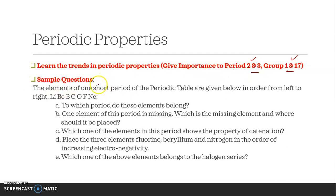Here are sample questions. For example, elements of one period are shown and related questions are asked: to which period do these elements belong? One element is missing, which is it and where should it be placed? Which element shows properties of catenation? Place three elements fluorine, beryllium and nitrogen in order of increasing electronegativity. Questions like this will come.